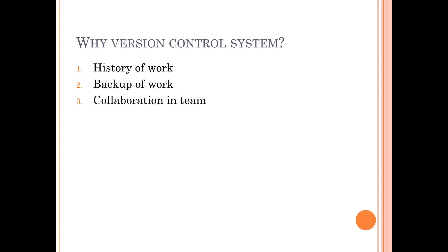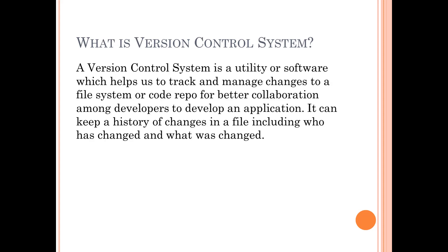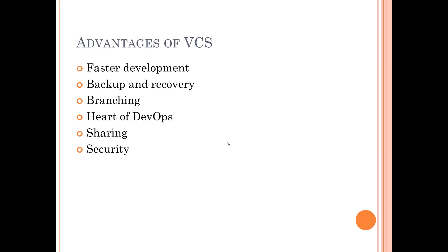For all of this, we require a system called a Version Control System, or VCS. A version control system is a utility or software which helps us to track and manage changes to a file system or code repository, for better collaboration among developers to develop an application. It can keep a history of changes in a file, including who has changed it and what was changed.